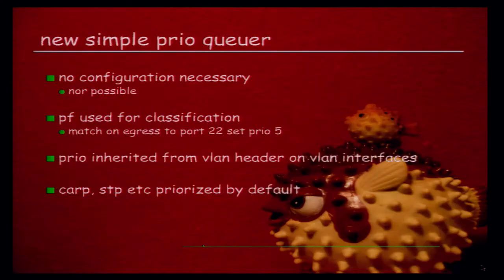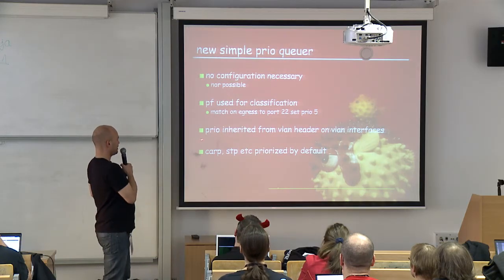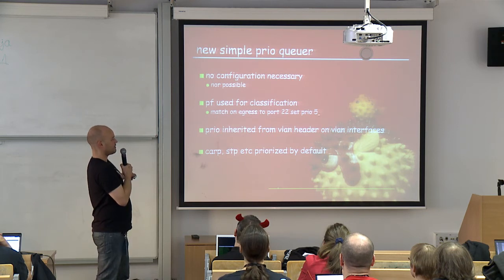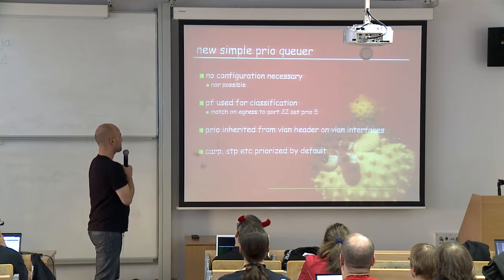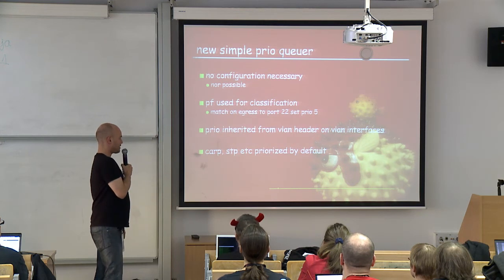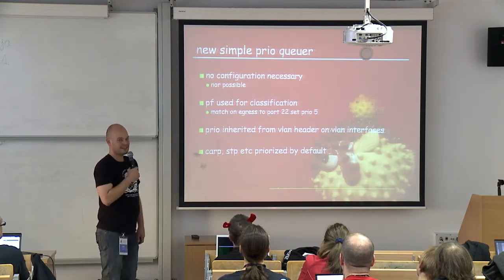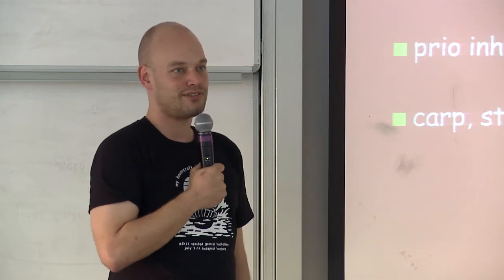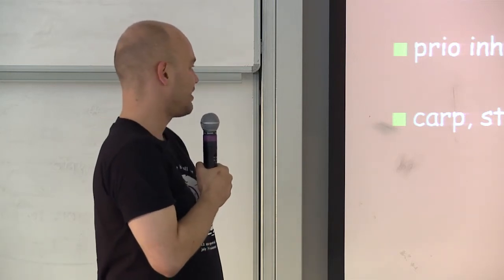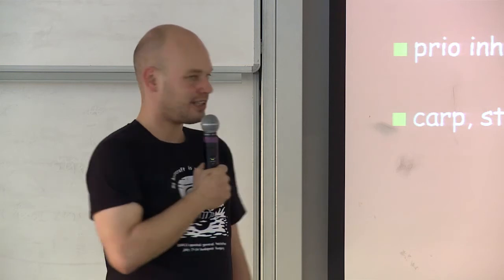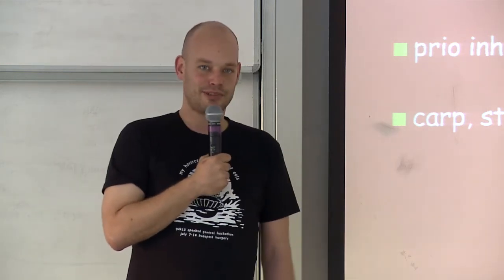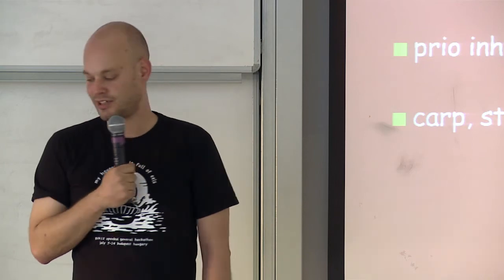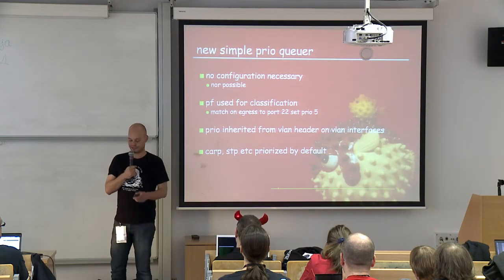There's no configuration required for this. PF is still used for classification in a very simple way — you just do 'set prio' to a number between 0 and 7 on matching packets. The priority field is inherited from the VLAN header if the packet comes in on a VLAN interface. CARP and spanning tree announcements (BPDUs) are prioritized by default — you don't have to do anything. And you cannot turn off the priority queue. We don't believe in buttons.